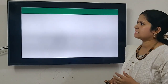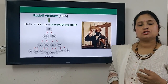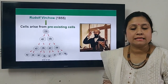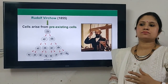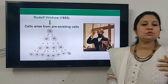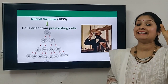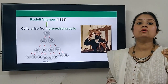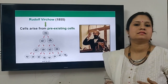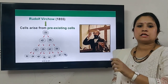After a year, in 1855, Rudolf Virchow explained how cells arise. He said all cells arise from pre-existing cells through cell division — new cells always come from old cells. In Latin, he stated this as 'omnis cellula e cellula,' which means all cells arise from pre-existing cells. This statement was added to cell theory.